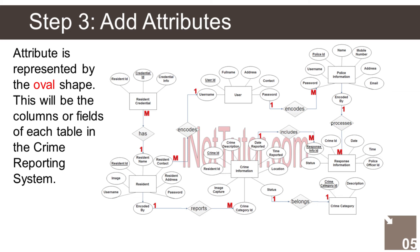The Police Information entity has the following attributes: 1. Police ID — primary key, represented with underline, 2. Name, 3. Mobile number, 4. Address, 5. Email, 6. Username, 7. Password, 8. Encoded by — foreign key.